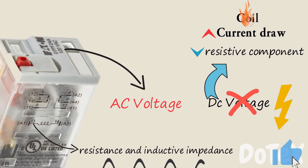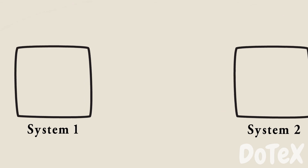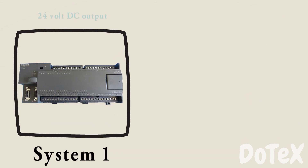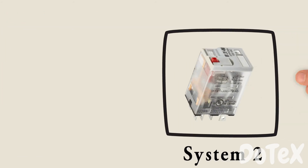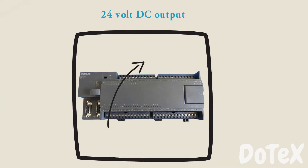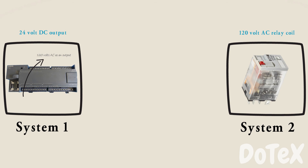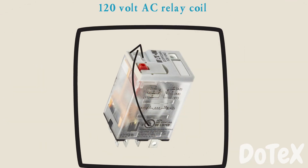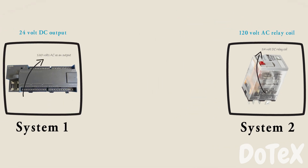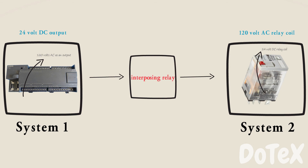If we must interface two systems that use two different voltage levels — for example, a programmable logic controller with a 24 volt DC output and a 120 volt AC relay coil — we must either replace the PLC with one that can supply 120 volt AC as an output to directly operate the relay coil, or replace the 120 volt AC relay coil with a 24 volt DC relay coil, or find a means of translating these two different voltage levels, such as an interposing relay — a relay that translates one magnitude of input to a different level of output.